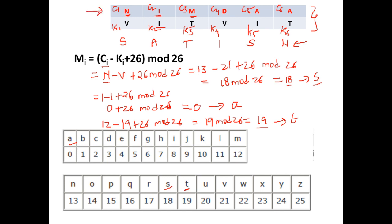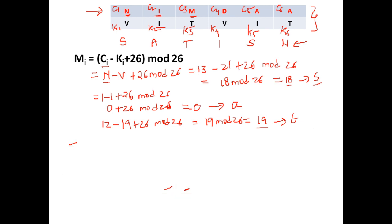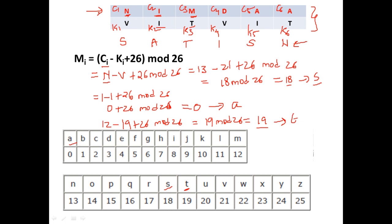So now we have looked at two methods: one using the 26×26 table directly to encrypt plaintext to ciphertext and then decrypt back; and the second using the algebraic expressions C_i = (M_i + K_i) mod 26 for encryption and M_i = (C_i - K_i + 26) mod 26 for decryption. That's about the Vigenère cipher. I hope you are very clear with how to encrypt and decrypt using Vigenère cipher. Thank you.